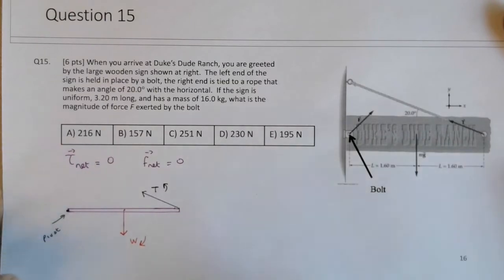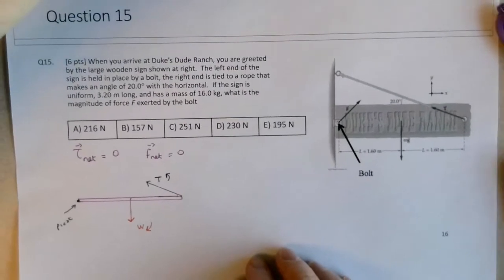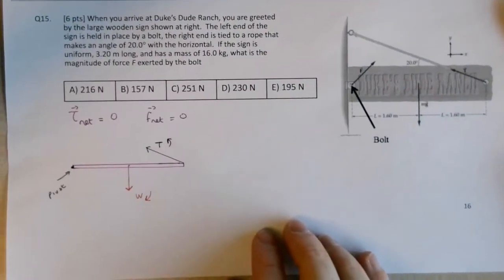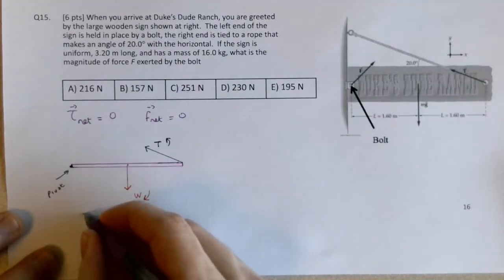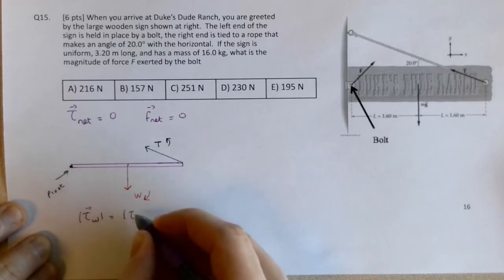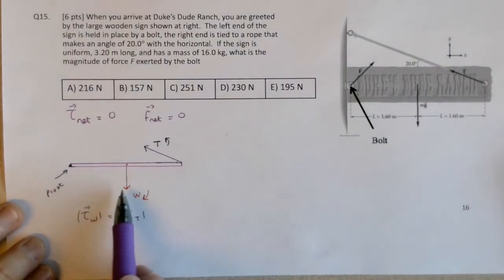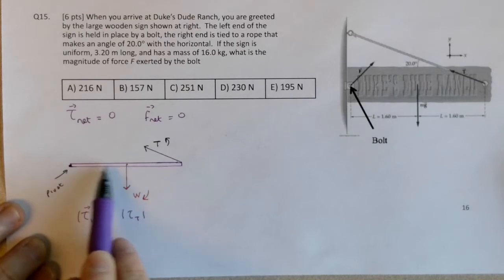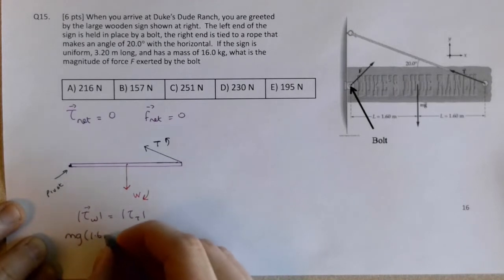The weight will tend to rotate the sign in a clockwise fashion and the tension will tend to rotate in a counterclockwise fashion. So since the net torque is zero, the torque due to the weight force should be equal to the magnitude of the torque due to the tension force. So the torque due to the weight is just the size of its force times this perpendicular distance here, which is half the length of the sign. So this is just going to be mg times 1.6 meters.